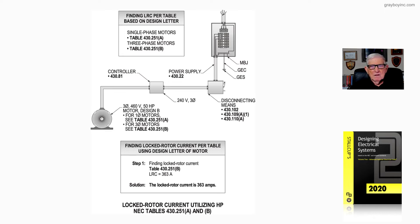We can pick up a single-phase starting current for this motor based upon its design letter from table 430.48. But for three-phase, we would need to look at table 430.251, and we would look at B, around page 334 in that area in your codebook.